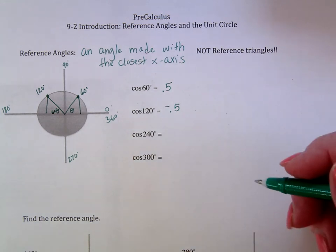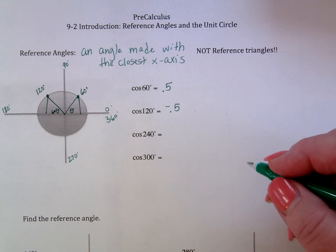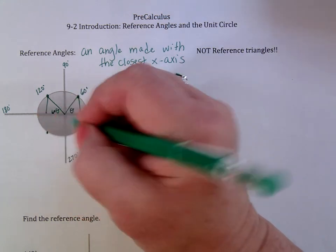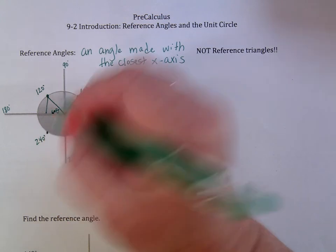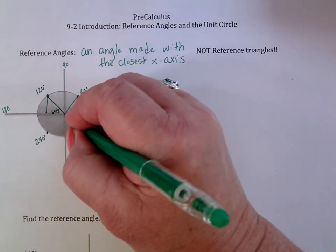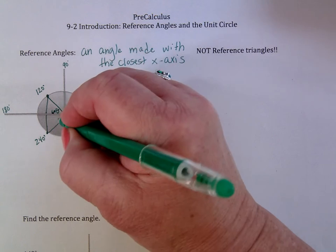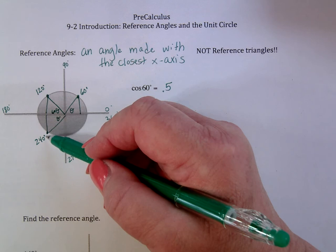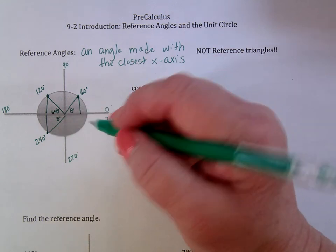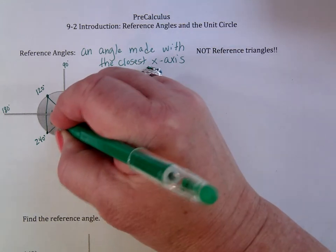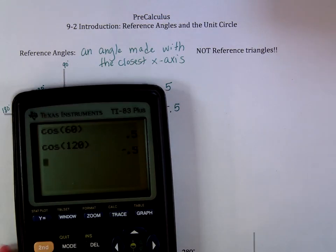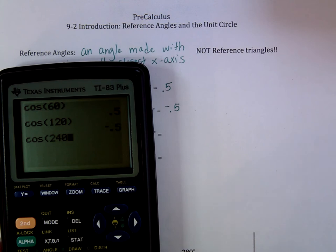We can talk about why it's negative instead of positive. If I come down to 240, that's between 180 and 270. The reference angle would be made with the x-axis, and to go from 180 to 240 I've gone another 60 degrees — so my reference angle is 60 degrees. The cosine of 240 is also a negative 0.5.